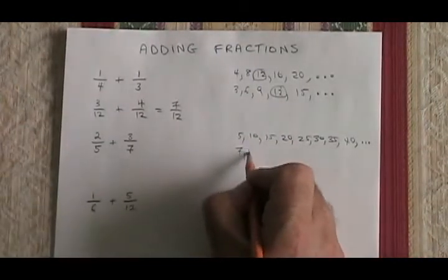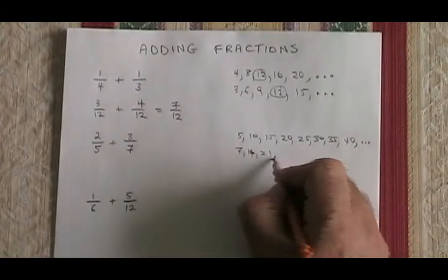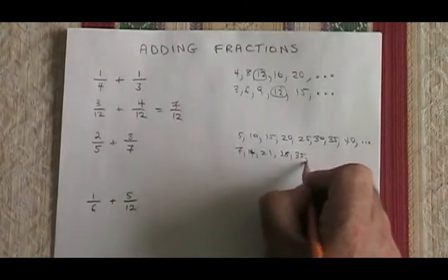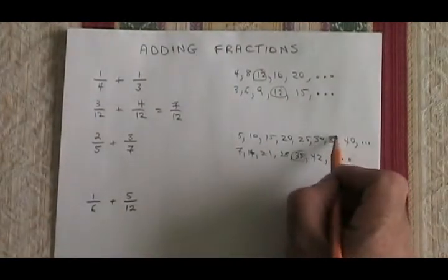For 7, I have 7, 14, 21, 28, 35, 42, and it keeps going. The lowest number that's on both lists is the 35.